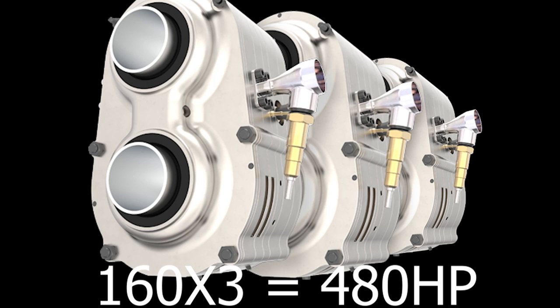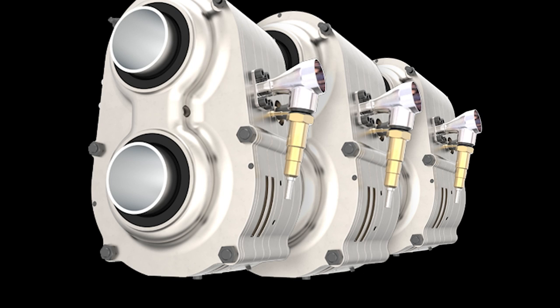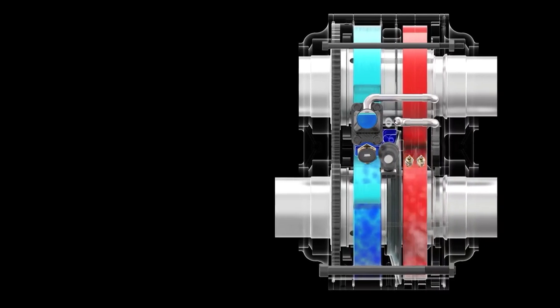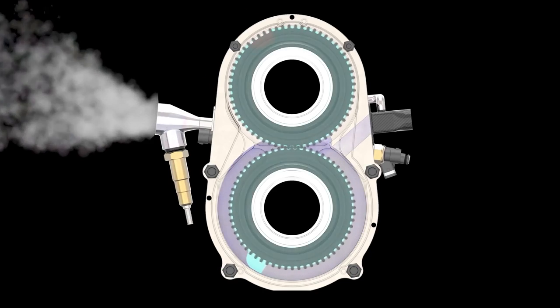So let's say you have three rotors. You would have 480 horsepower and a total weight of the motors of about 48 kilograms, which is an insane power to weight ratio for an engine.